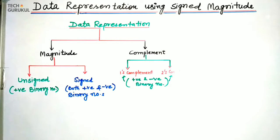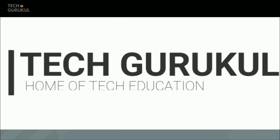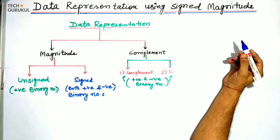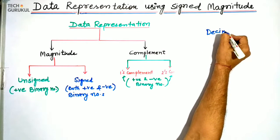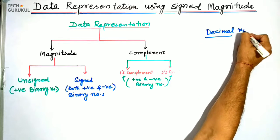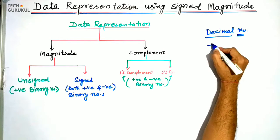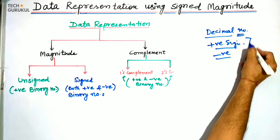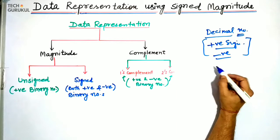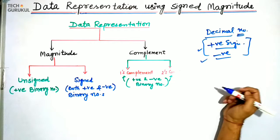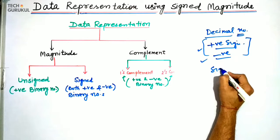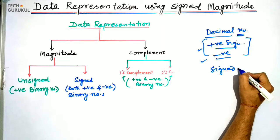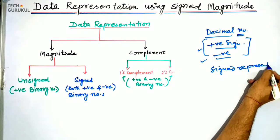In this presentation we will study about data representation using signed magnitude, or sign number representation. In decimal numbers we use positive and negative signs for denoting numbers. This positive and negative sign representation is called signed representation.